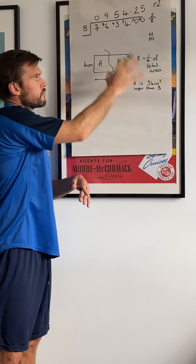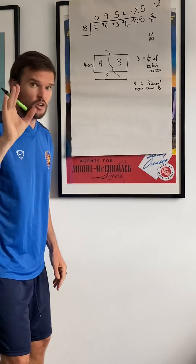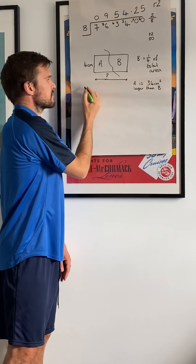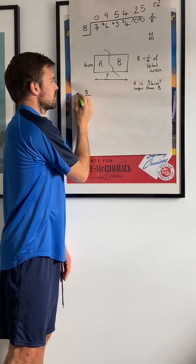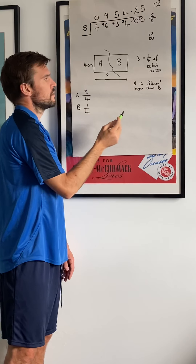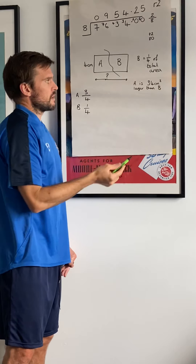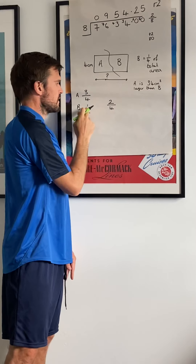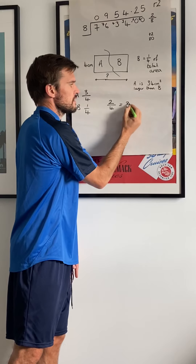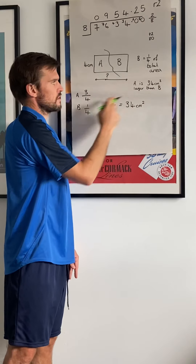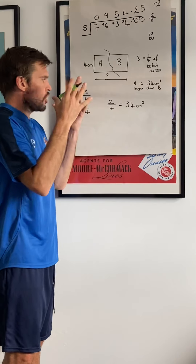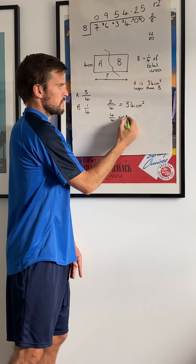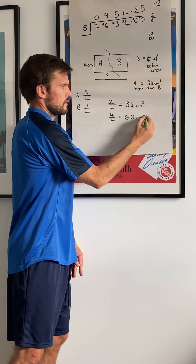Next up, problem solving. You need to write down all the key bits of information — real simple. Here is a rectangle. B is a quarter of the total area, so you should work out that A is going to be three quarters of the area, and B is a quarter. A is thirty-four centimeters squared larger than B. The difference between these two is two quarters, so this one is two quarters bigger. I know that two quarters is equal to thirty-four centimeters squared, which should then tell me that the total area of this shape is going to be four-fourths, which is sixty-eight centimeters squared.